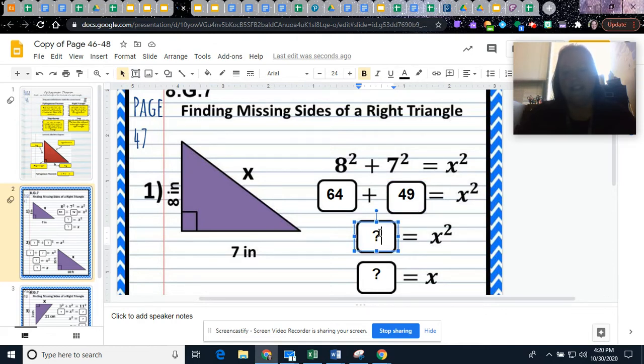We're going to take 64 plus 49. Doing this in my head, I see that's really close to 50. If I did 50 plus 64, it'd be 114, and then I have to take that one away, so that would be 113. Here at the end, the last step, this is where you're going to take the square root. That's why we practiced with square root last week.